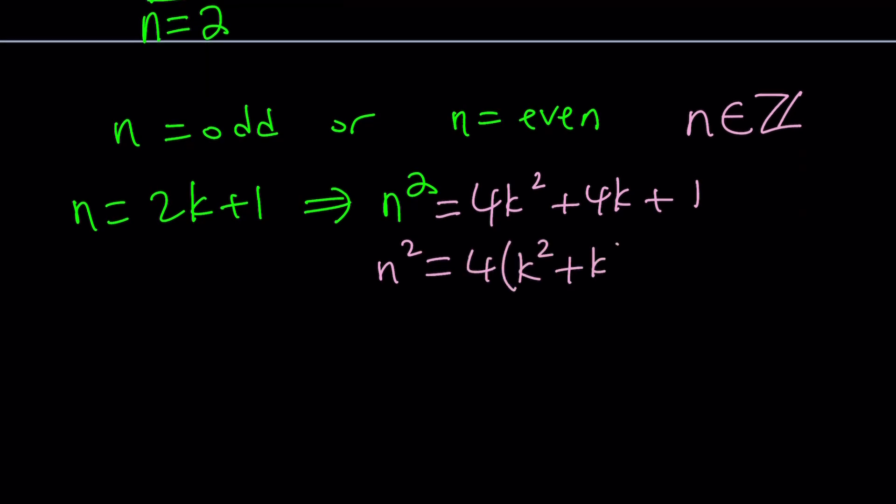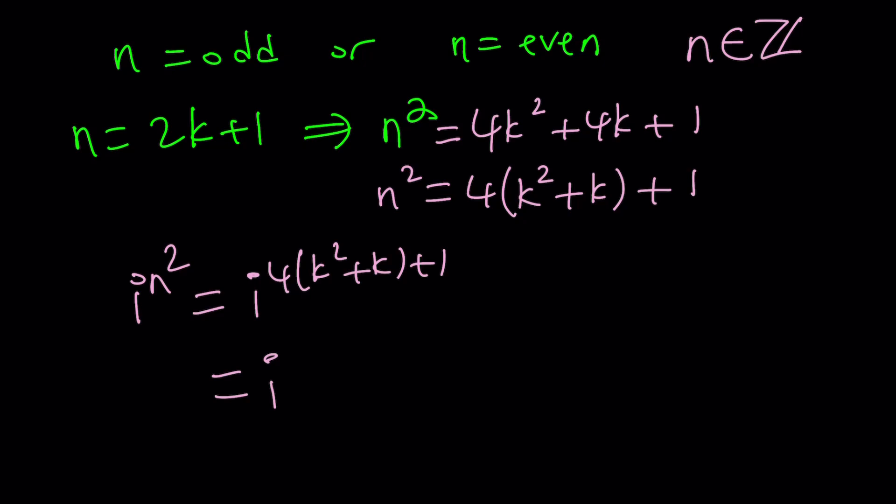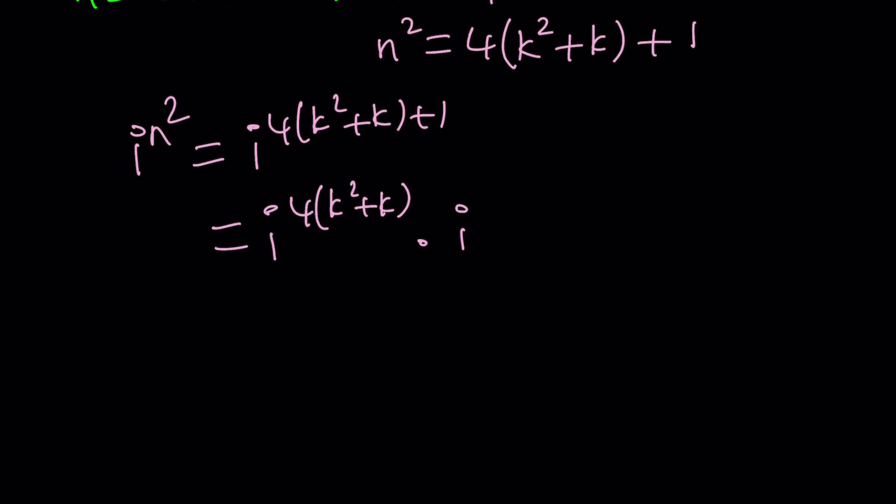And then our i to the power n squared is going to be i to the power 4 times k squared plus k plus 1, which can then be written as i to the power 4k squared plus k times i.